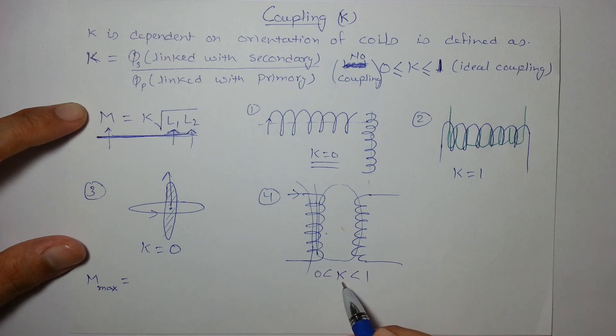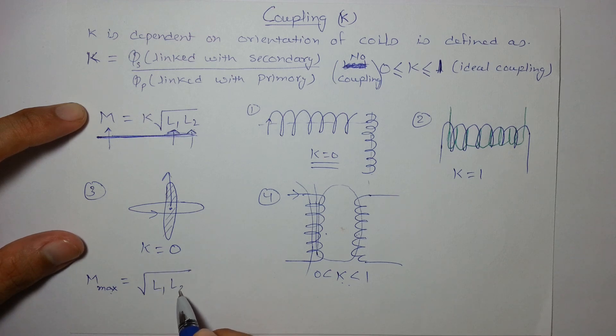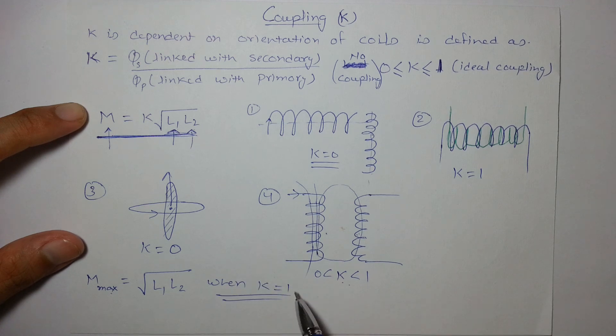And the maximum mutual inductance can be root of L1 L2, obviously when K is nothing but 1, when the best coupling or the ideal coupling takes place. Thank you.